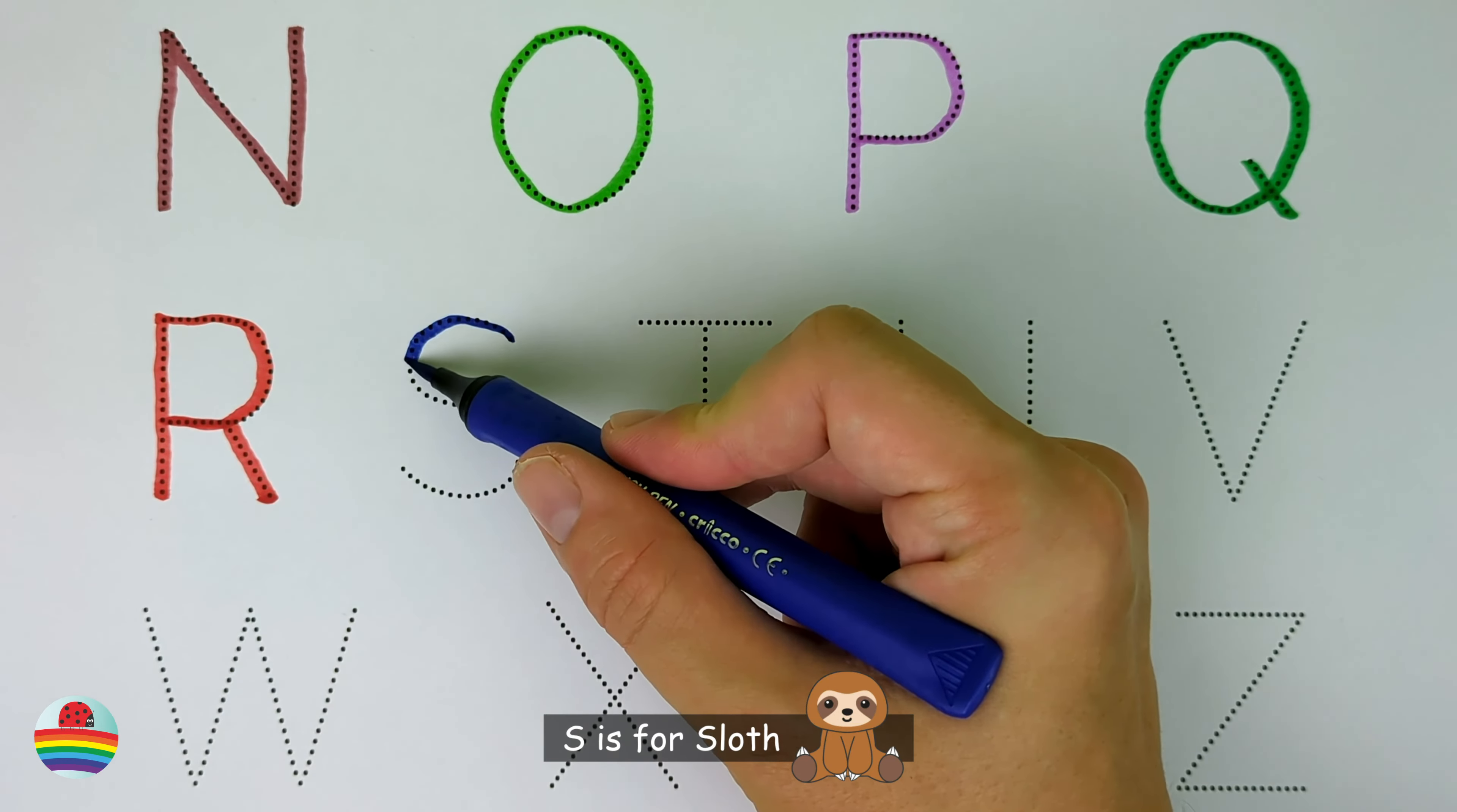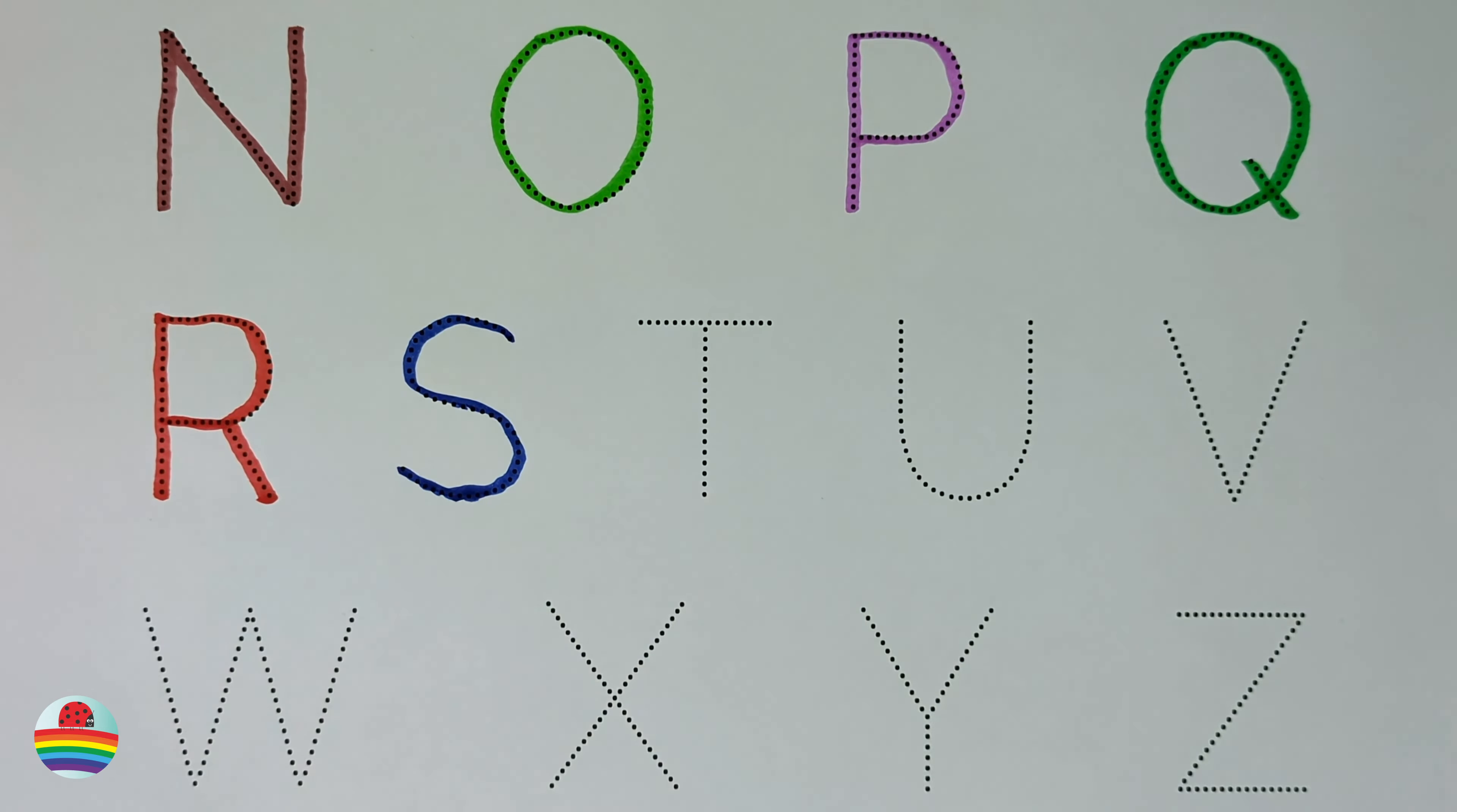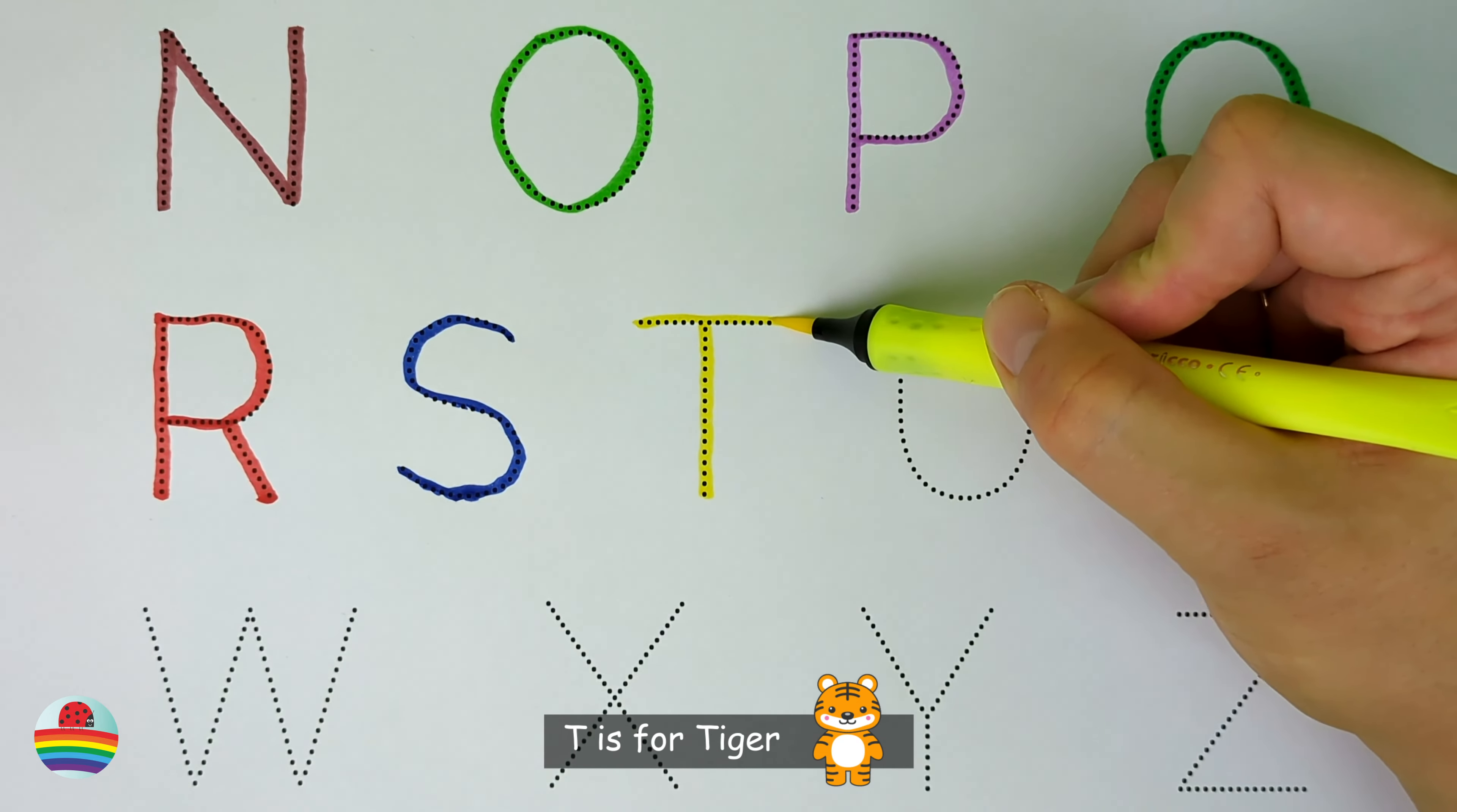S. S is for sloth. S. T. T is for tiger. T.